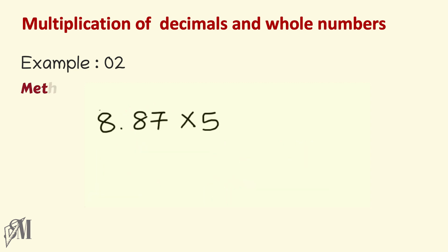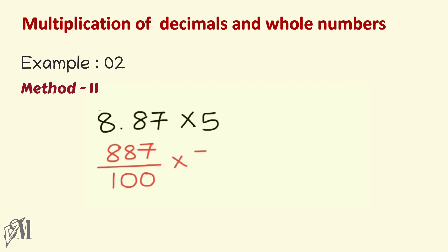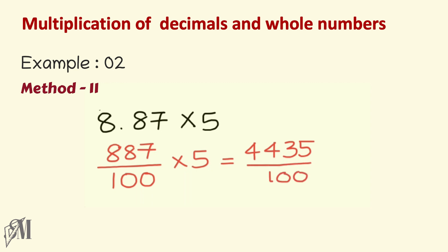In the second method, we write 8.87 as a fraction: since it has two decimal places, the denominator is 100, giving 887 over 100. Multiplying by 5 gives 4435 over 100. Since 100 has two zeros, the answer must have two decimal places, giving 44.35 as the final answer.